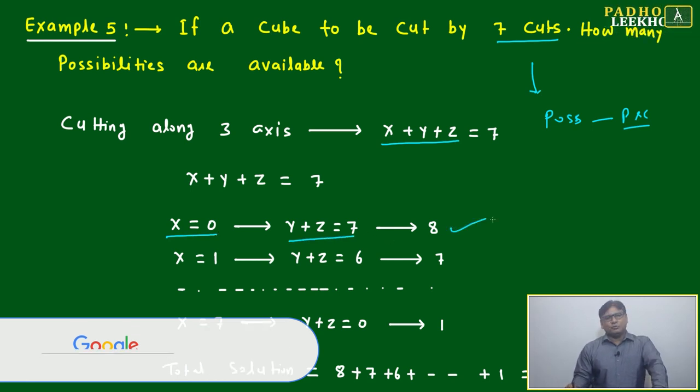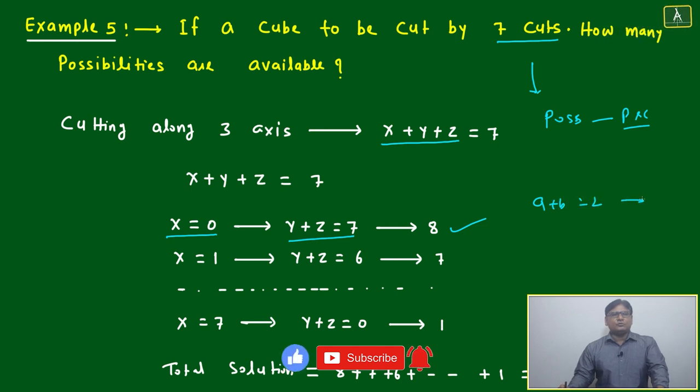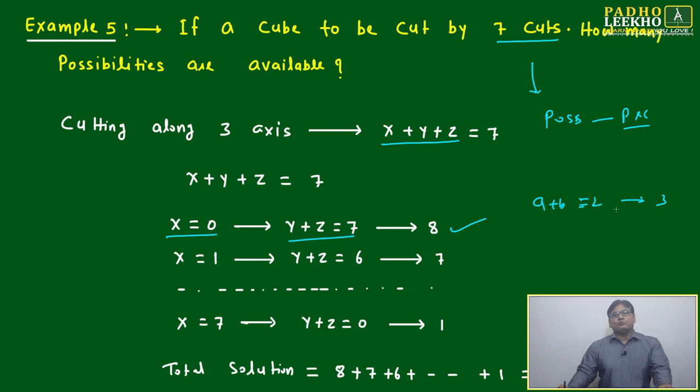We've discussed multiple times: if a plus b equals 2, how many solutions do we get? 3 solutions if whole numbers are allowed, meaning a can be 0. If the condition is a minimum of 1, then only 2 solutions. Here, y plus z equals 7 gives total 8 solutions. If x equals 1, y plus z equals 6, giving 7 solutions.